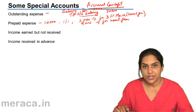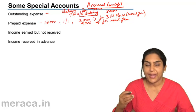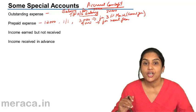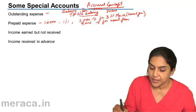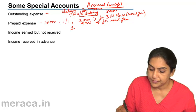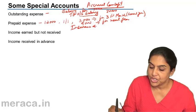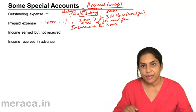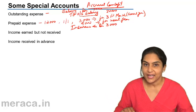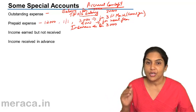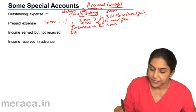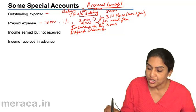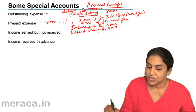What is the entry for this? Normally, when we pay insurance, the entry is Insurance Account debit to Cash. But in this particular case, insurance expense is only 3,000. The remaining 9,000 is not expense for the current year — it is expense for the next year. This amount of 9,000, which is expense for the next year, cannot be treated as expense this year. It goes into Prepaid Insurance Account — 9,000 to Cash.